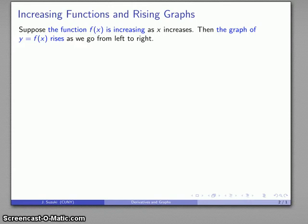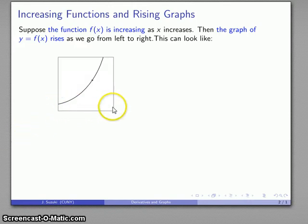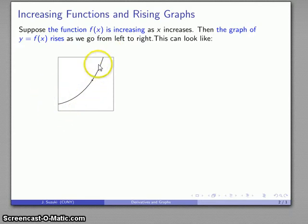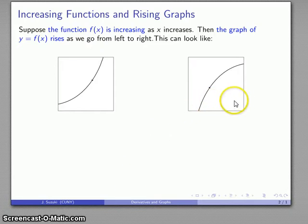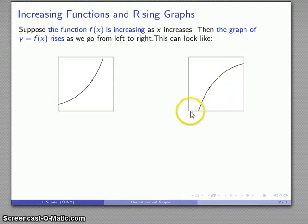So what does this look like? Well, it can look like this — as I go from left to right the graph is rising and the y values are increasing, so the function is increasing. But it's also possible that my graph might look something like this, and again as I go from left to right my y values are increasing, my graph is rising, and my function values are increasing.